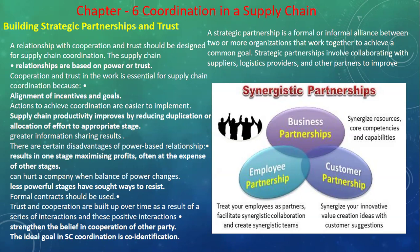A relationship with cooperation and trust should be designed for supply chain coordination. Supply chain relations are based on power and trust. You need to understand how much trust you have in your supplier and build a good relationship. The supply chain team also needs a good relationship with the supplier, and the entire system needs to be strong to make this process efficient.